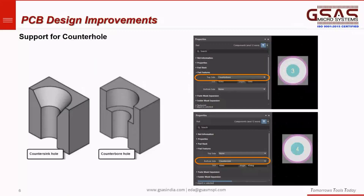The next improvement in PCB design is support for counterbore holes, which allow room for screw heads. Countersink and counterbore holes are two types of counter holes that allow for different types of screws. This release enables the ability to choose counterbore and countersink holes. The key difference between the countersink and counterbore holes is the size and shape. Counterbore holes are wider and more square to allow for the screw head. You can utilize both countersink and counterbore hole types in the latest version of Altium 22.